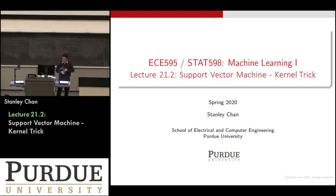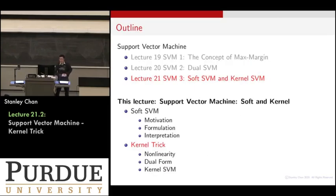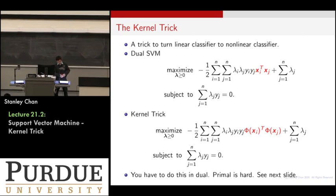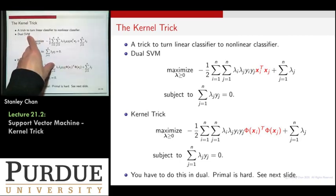Let's talk about the kernel trick. Recall from the last lecture, what we have studied so far is the dual formulation of the support vector machine. The dual formulation is a very complicated thing. You start with the primal formulation, look at the Lagrangian function, take the gradient with respect to your primal and dual variables, do all these simplifications, and at the end of the day you end up with this dual SVM formulation.